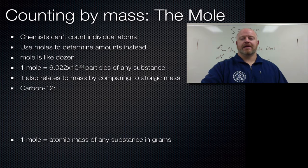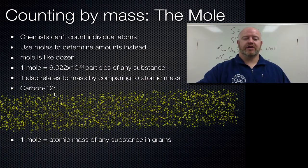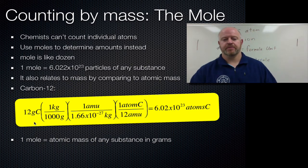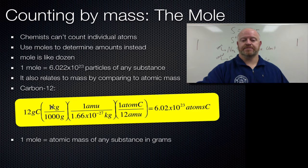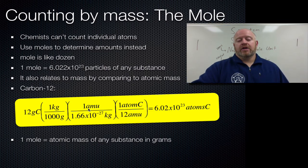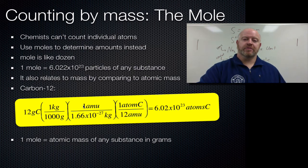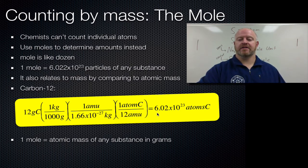The mole also relates to mass by comparing its atomic mass. Let's talk about carbon-12, which has a mass of 12. If we take 12 grams of carbon-12 and figure out how many atoms are in that sample: there are 1,000 grams in a kilogram, and 1.66 times 10 to the negative 27th kilograms in one AMU. AMUs are atomic mass units — a way to measure the mass of individual atoms. Carbon-12 has 12 AMUs per atom — six protons and six neutrons. Running those conversions gives us 6.02 times 10 to the 23rd atoms per 12 grams of carbon-12.